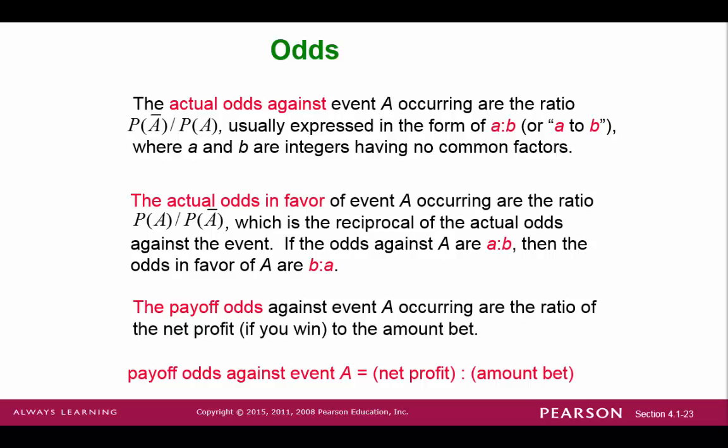The last thing to discuss are odds. The odds against something happening is the ratio of the probability of the complement over the probability of that event. This ratio is reduced as a fraction A over B, and we usually say the odds are A to B. The odds in favor of an event would just be written backwards, B to A.